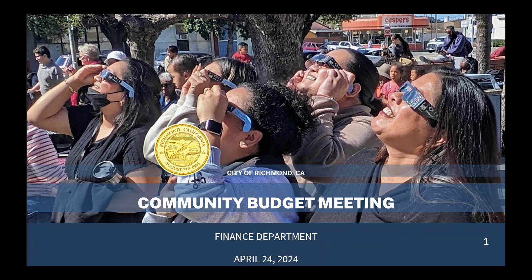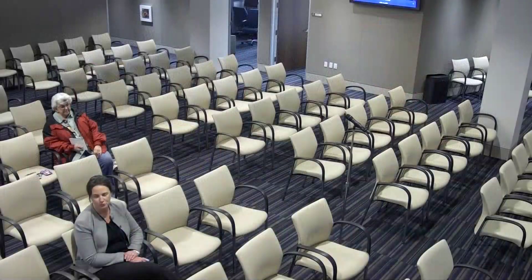My name is Jerry Garule, accounting manager here at the city of Richmond. I manage the budget division and treasury division. Tonight we have the community budget meeting where we have staff in the audience for questions, and we're going to talk about the development of the budget process. To kick things off, we have Nikki Mastay, the deputy city manager of internal services.